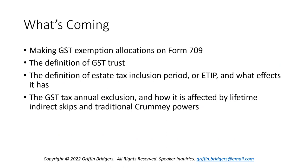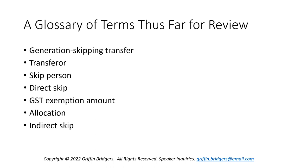So what's coming next? We're going to dive into making GST exemption allocations on Form 709 and the strategies behind that, and then pick up the definition of GST trust and the definition of the estate tax inclusion period — ETIP — and what effects it might have. Another subject coming down the road will be the GST tax annual exclusion and how it's affected by lifetime indirect skips and traditional Crummey powers. Here's a glossary of terms so far for review, and we've added one more today: indirect skip.